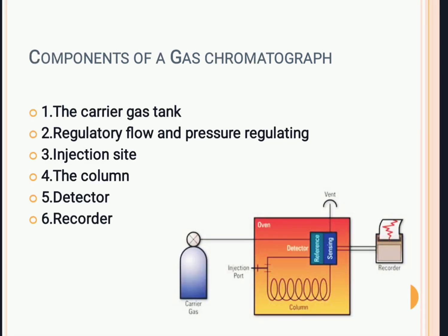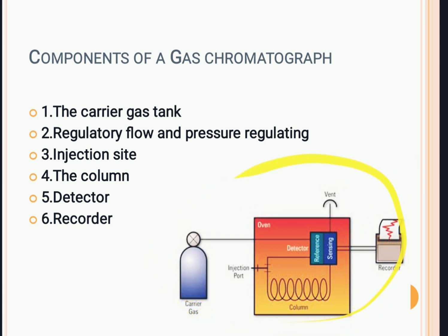Here you can see the six parts of the gas chromatograph. The instrumentation, known as a gas chromatograph, contains: firstly the carrier gas tank, then the regulator system, then an injection system, then a column, then a detector, and lastly a recorder. This is the block diagram of the gas chromatograph.